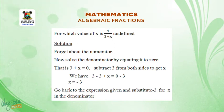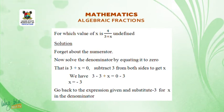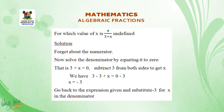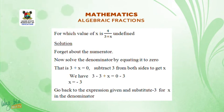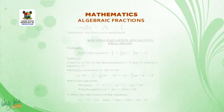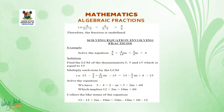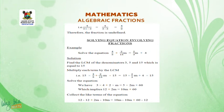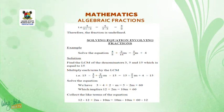Subtract 3 from both sides: 3 minus 3 plus x equals 0 minus 3, so x equals minus 3. Substitute minus 3 for x in the denominator: 4 all over 3 plus (minus 3) equals 4 all over 3 minus 3, which equals 4 all over 0. Therefore, the fraction is undefined.